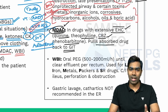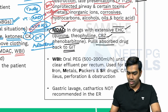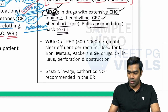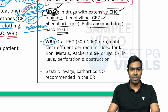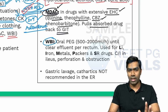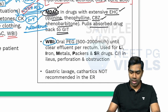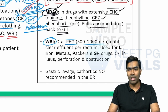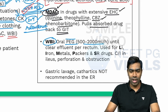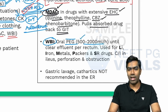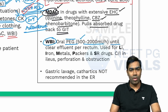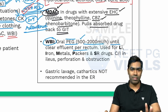The third procedure is whole bowel irrigation, where you give polyethylene glycol — PEG — orally. The dose is 500 to 2000 ml per hour: in children, 500 to 1000 ml per hour; in adults, 1500 to 2000 ml per hour. The goal is to continue until you see a clear effluent from the rectum without any contamination.